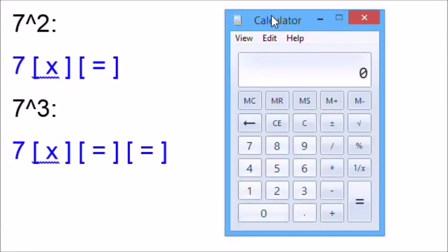Let's calculate 7 squared and 7 cubed. First, 7 squared. I enter 7 times equals to get the answer of 49. Now let's cube 7 or raise 7 to the third power. On this Windows calculator, and most four function calculators, my keystrokes would be 7 times equals equals. I get an answer of 343.